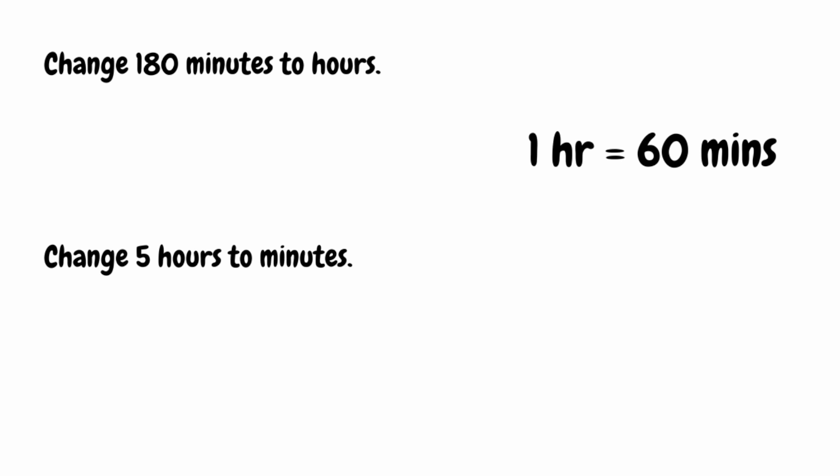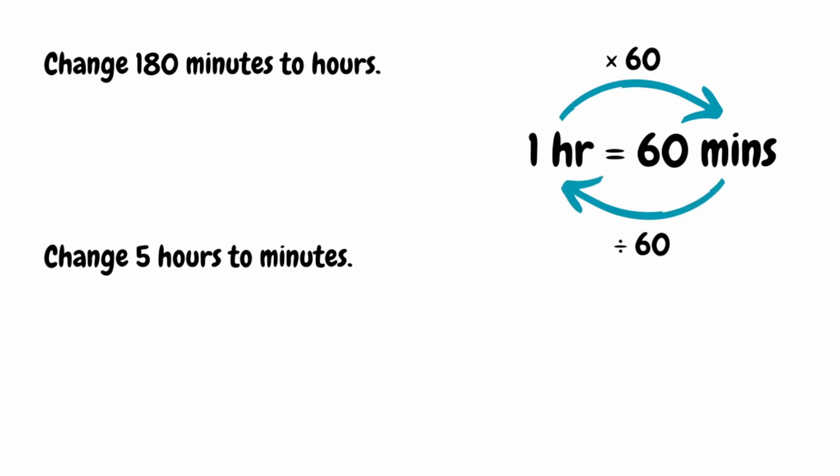We use the unit conversion that one hour is equal to 60 minutes. The reason we find our unit conversion is to help us understand what we have to do when converting from one to another. To get from one hour to 60 minutes, we simply multiply by 60. And to get from minutes back to hours, we divide by 60, because 60 divided by 60 gets us back to 1. So to get from hours to minutes, multiply by 60; to get from minutes to hours, divide by 60.